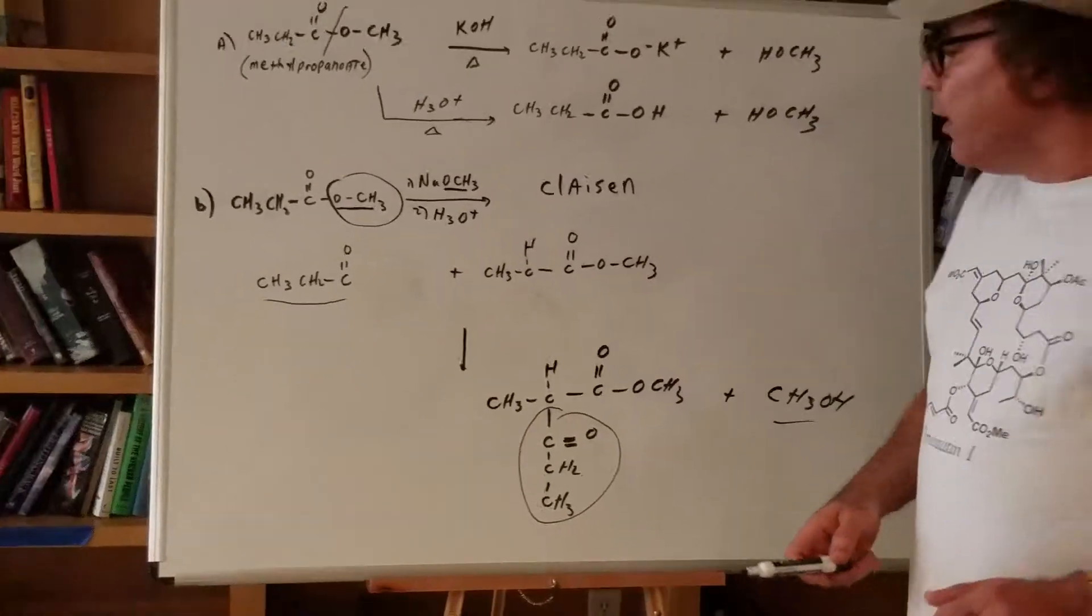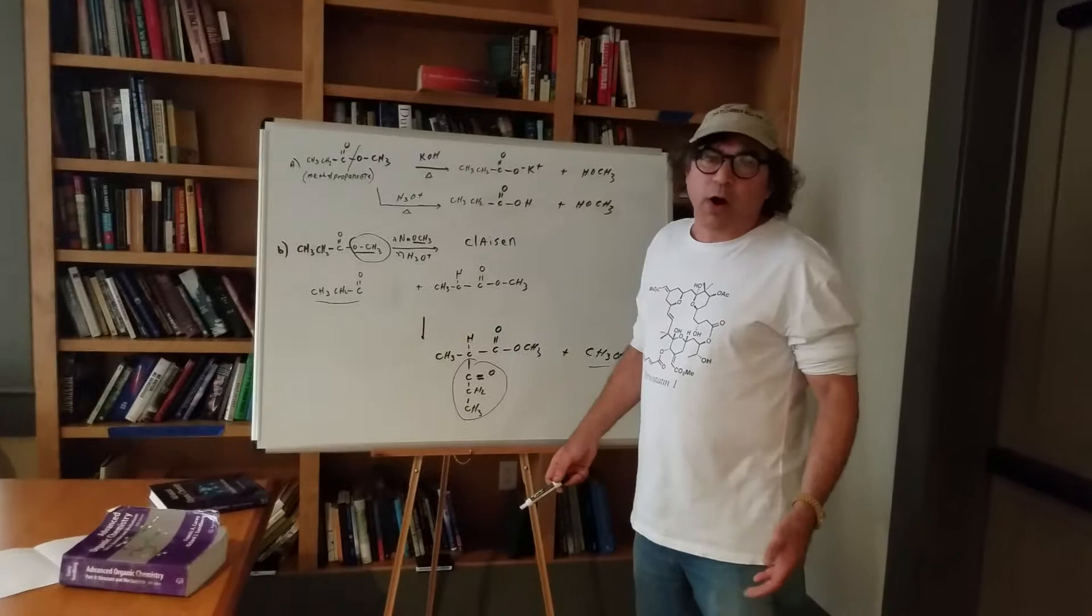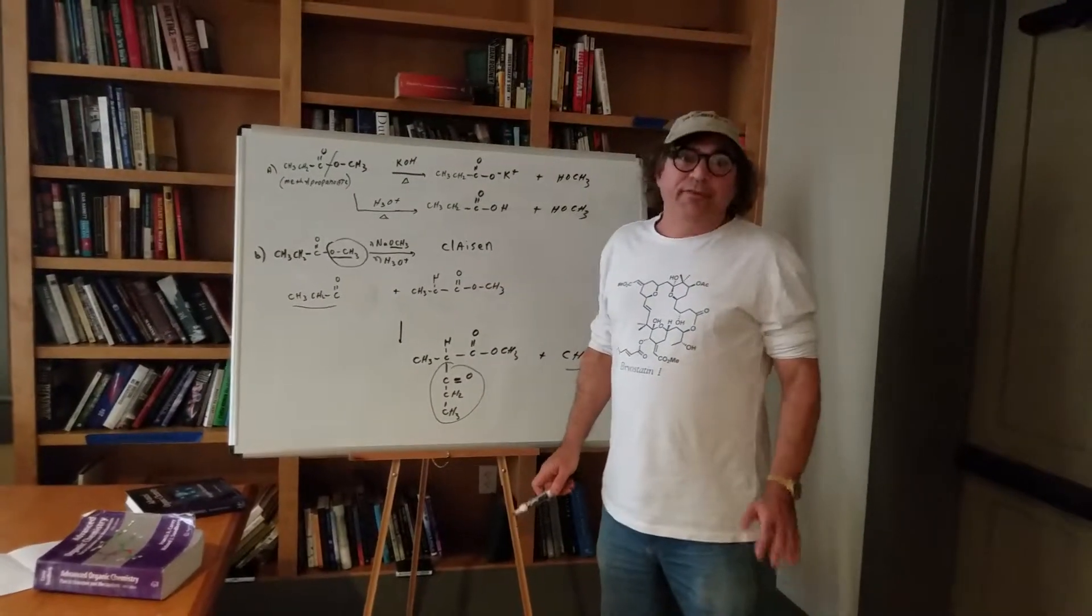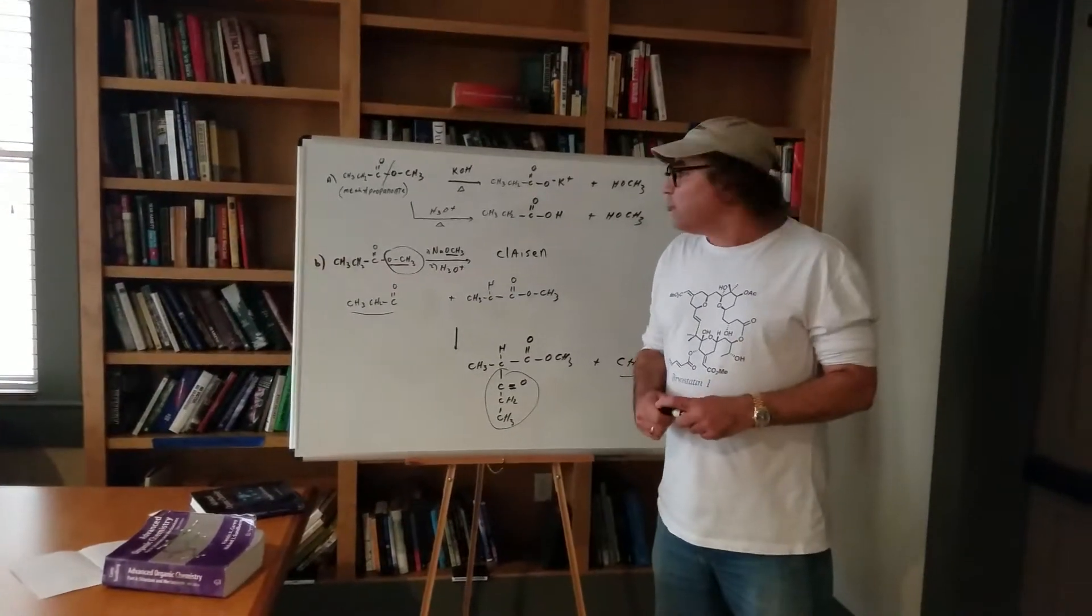So in a condensation reaction, you're making a larger molecule and you're splitting off a small molecule, usually water, or in this case, alcohol. This is a must-have. For the DAT, if you want to score 25 and beyond, you've got to know how to do a Claisen.